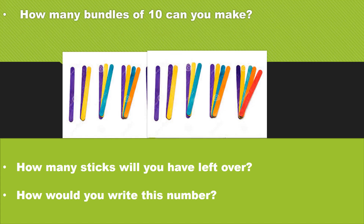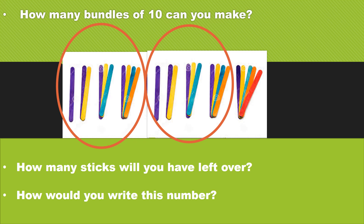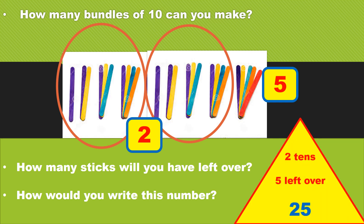Remember, I asked you to see how many groups of ten you can make. Then I asked you to say how many sticks were left over. I also asked you to write both numbers down so we can see how many sticks we have all together. You can see we have two groups of ten and one, two, three, four, five sticks left over. We can write these numbers by saying two tens and five left over is 25.